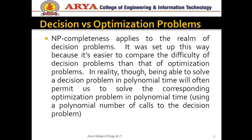First we start with decision versus optimization problems. There are a number of problems that exist like P, NP, NP-complete, and NP-hard. In the decision problem, we only take the decision — either this problem has any solution or not. Whereas in the optimization problem, we have to find one optimal solution for a particular problem in polynomial time. So in the decision problem we find only yes or no in polynomial time, whereas in the optimization problem we find the optimal solution in polynomial time.